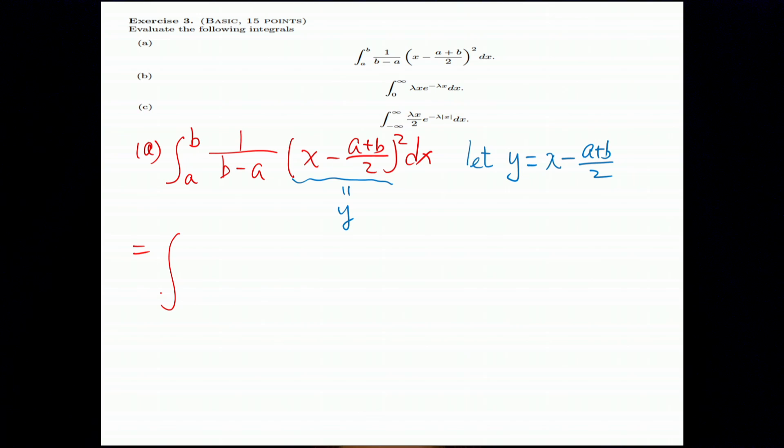So if B, the upper limit is B, then you change the variables to Y. Then the upper limit will be B minus A plus B divided by 2. And the lower limit is A minus A plus B divided by 2. And 1 divided by B minus A, the same. And here's Y squared, DY. Since Y equals X minus A plus B divided by 2, then DY equals dx.